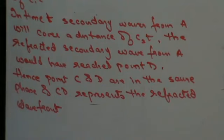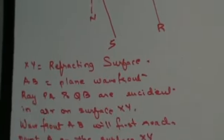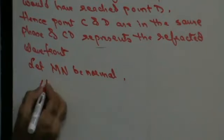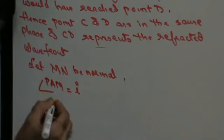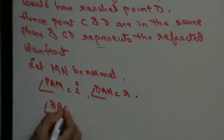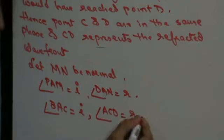Now, let us assume that rays are going parallel, so I will join A to produce S and C to draw CR. Let this be S and R. I can say that let MN be the normal. So I can say that angle PAM is my angle of incidence and angle DAN is my angle of refraction. Therefore, angle BAC will also be equal to my angle of incidence and angle ACD will also be my angle of refraction.